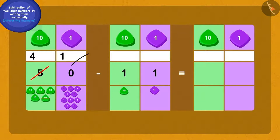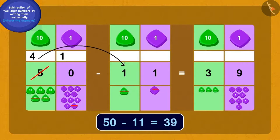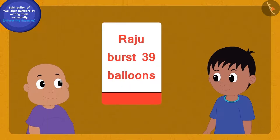Yes — we will subtract one ones from ten ones and we will get nine ones. And finally, if we remove one ten from four tens, we will get three tens. Raju became excited after learning this new process.